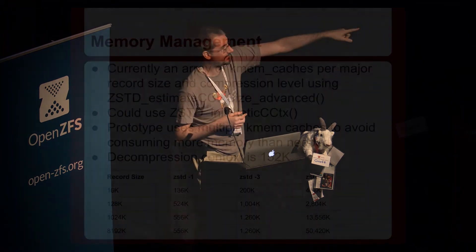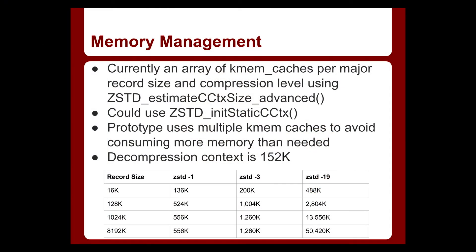Those KMEM caches only get used if you actually start using something at that block size and compression level. Those 50 megabyte KMEM caches won't actually take up any memory unless you start compressing 8 meg blocks of data. In the newer version there's a new static context API where you can provide your own memory instead of it dynamically allocating from the KMEM cache, but we'd need a pool of pre-allocated things per thread, and we don't want to do that with 50 megabyte contexts. So currently the KMEM cache is what I've stuck with.